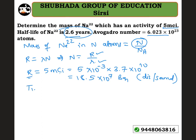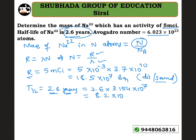t-half equals 2.6 years. Convert to seconds by multiplying by 3.154×10⁷ seconds per year. You will get t-half equals 8.2×10⁷ seconds.